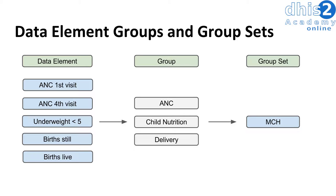The last principle we will discuss is data element groups and group sets. Just like organization units, we can take our data elements and create groups, and further classify these groups into group sets. For example, we can take ANC first and fourth visit and group them into the ANC group, underweight less than 5 into the child nutrition group, and birth still and birth live into the delivery group. These three groups can then contribute to the maternal and child health group set. When we did data analysis, you typically selected your data elements by selecting a data element group first — these are quite useful to create and we will go through that process in the next session.